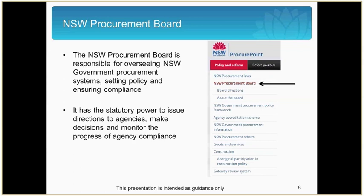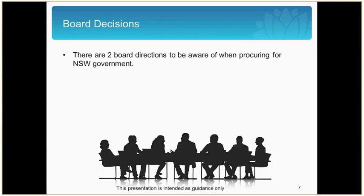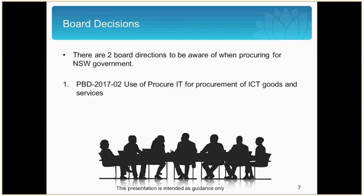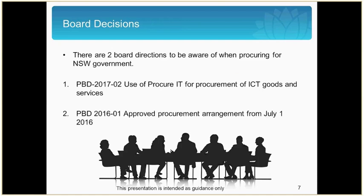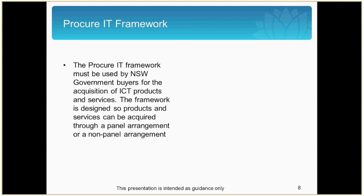It's important that you understand what directions the Board have set in relation to ICT goods and services. There are two Board decisions that you should be aware of: Procurement Board Directive 2017-02 regarding the mandated use of ProcureIT for the procurement of ICT goods and services, and Procurement Board Directive 2016-01 which defines approved goods and services procurement arrangements for New South Wales government agencies including ProcureIT.